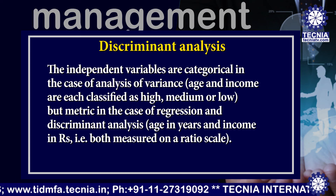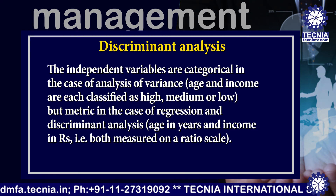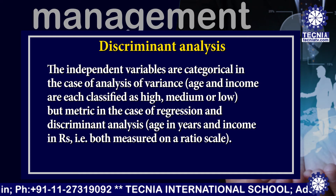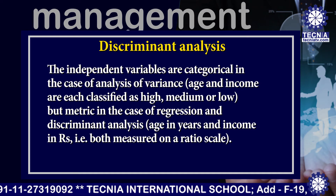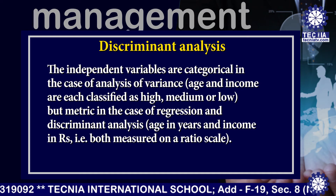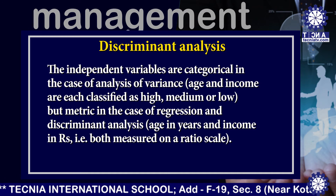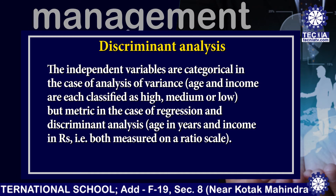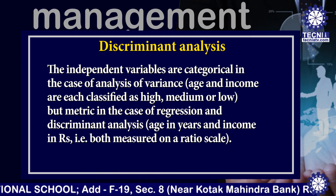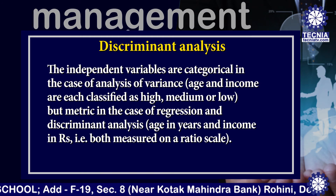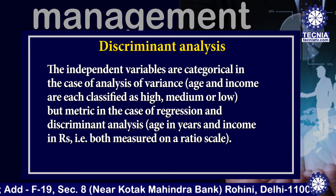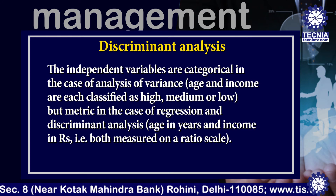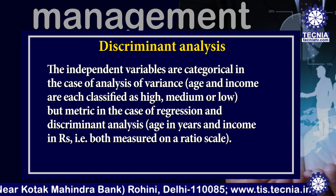The independent variables are categorical in the case of analysis of variance — here, age and income are each classified as high, medium, or low. But they are metric in the case of regression and discriminant analysis, where age is measured in years and income in rupees, both measured on a ratio scale.